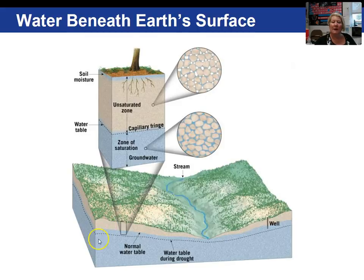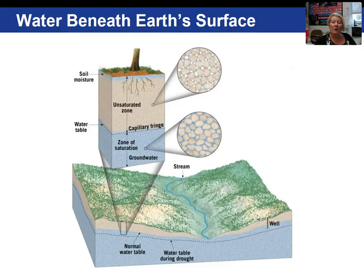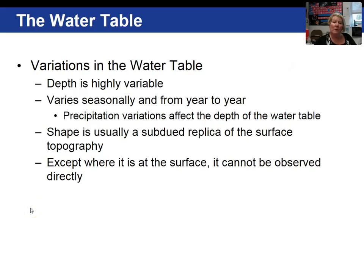In this diagram we have two different water tables shown. The normal water table sits at one depth, but during a drought the water table can change its elevation — in this case, drop down. If we look at this well that was drilled, it will produce water during a normal season. However, during a drought the water table can fall below the bottom of the well, so you would not be able to extract water from it. The water table is variable in depth, varying from season to season and year to year.